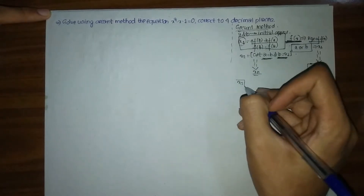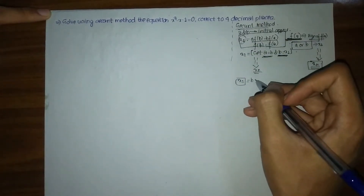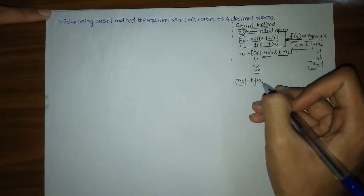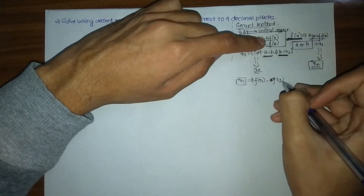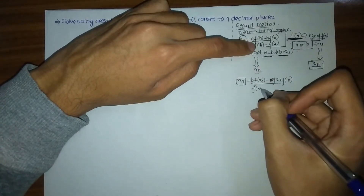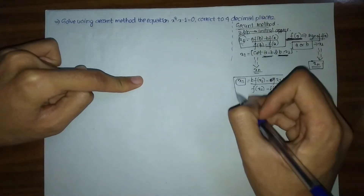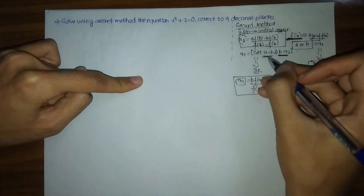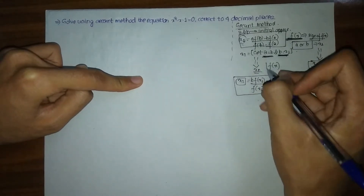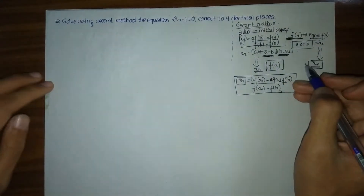For x2, A is replaced by B and B is replaced by x1. F(B) becomes F(x1) and F(A) becomes F(B). We simply set A equals to B and B equals to x1 without checking the sign of fx. That is the basic difference between the second method and the false position method.